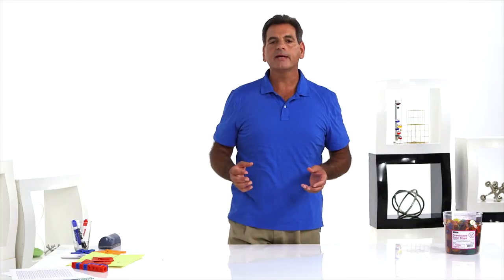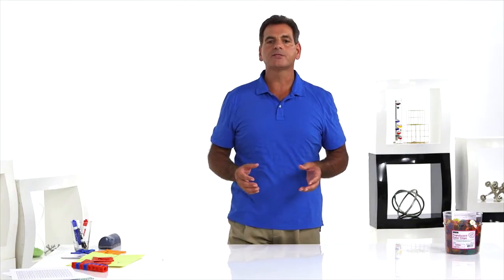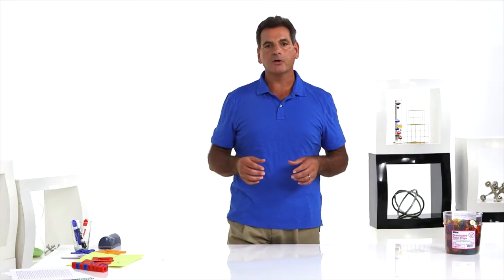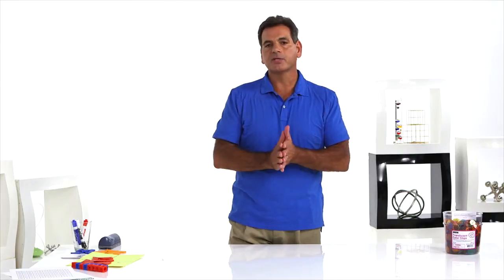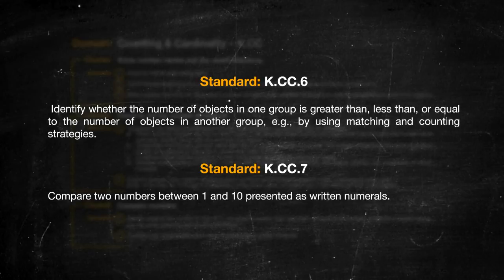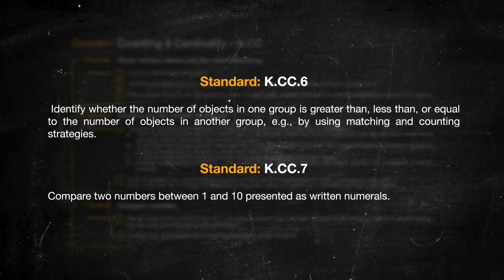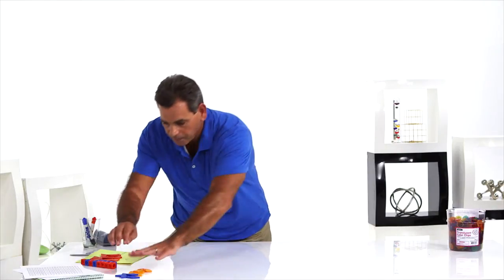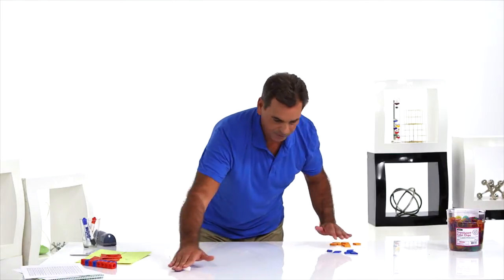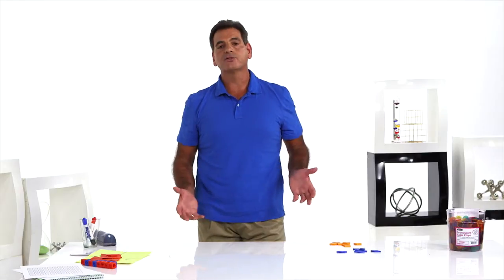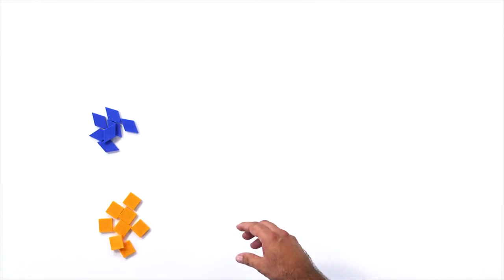While playing games like these, students are learning different standards at the same time. In kindergarten math, the standards are all very closely related — don't think you need to pick your way through them one at a time. The activities you do in one domain support standards in other domains. Now on to standards six and seven. We want students to use both matching and counting strategies to compare the objects in a group, and to be able to compare two numbers represented by numerals. We can do both of these things at the same time.